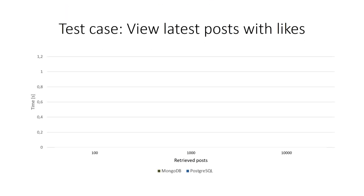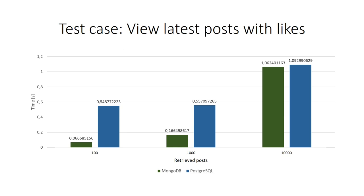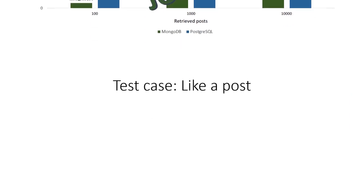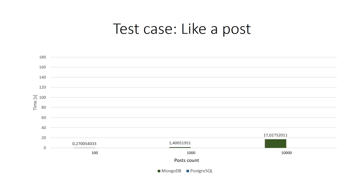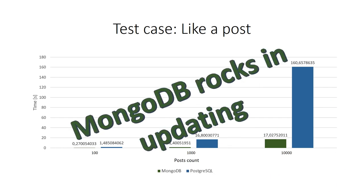But when requesting the latest posts together with the count of how many likes they have, the result is completely different. This time, MongoDB outperformed PostgreSQL. The difference is that MongoDB only needs to count the number of likes within the documents, but PostgreSQL has to join the likes-post table and perform a count on that. This is exactly the advantage of MongoDB: you can avoid joins with nested documents. When inserting likes for a post, MongoDB outperforms PostgreSQL again. It just has to find a post using an index and insert an element into the array of likes. PostgreSQL needs more time because it has to check the foreign key constraints.